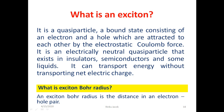An exciton is a quasiparticle — a bound or combined state of an electron and a hole which are attracted to each other by the electrostatic Coulomb force. It is an electrically neutral quasiparticle that exists in insulators, semiconductors, and in some liquids. It can transport energy without transporting net electric charge. The distance between an electron and a hole in an exciton is called the exciton Bohr radius.